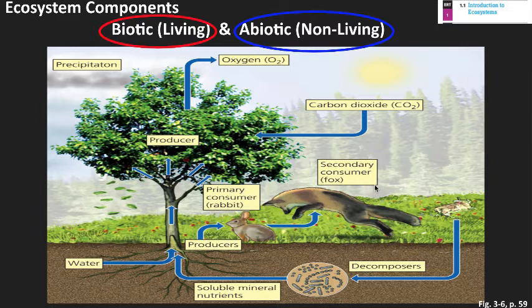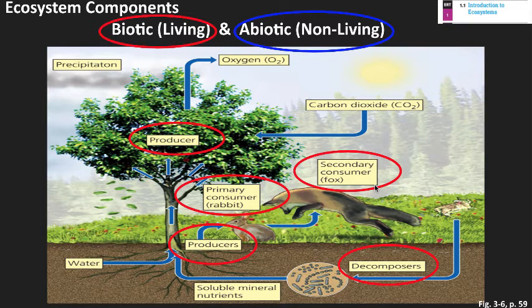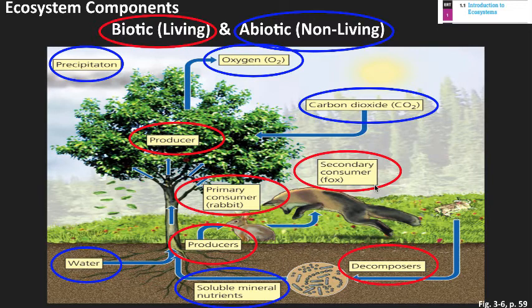In our ecosystem diagram, biotic components are anything living or once living — the tree (producer), the rabbit (primary consumer), the fox (secondary consumer), and decomposers. Abiotic components are non-living factors — anything important to the environment's physical structure, such as carbon dioxide, oxygen, minerals in the soil, water, and precipitation. These are critical to the environment but are not living components of an ecosystem.